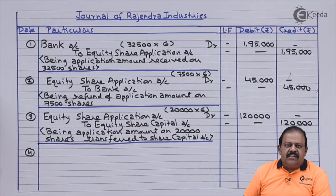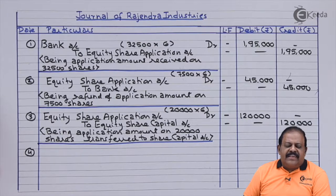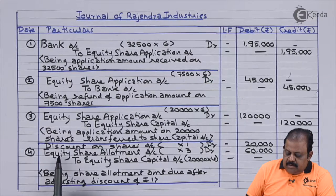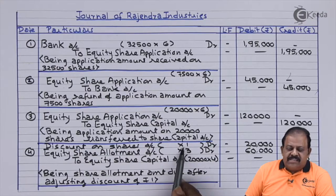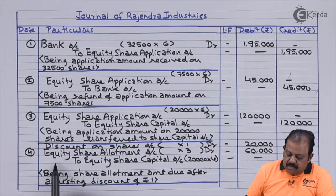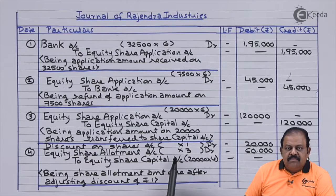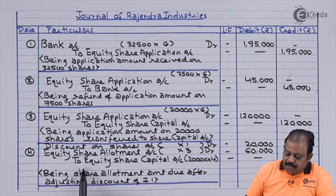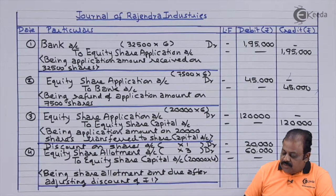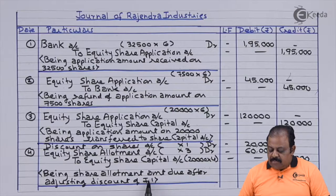Moving to the allotment stage: Entry 4 — for allotment amount due and discount. Discount on Shares Account Dr ₹20,000 (20,000 shares × ₹1). Equity Share Allotment Account Dr ₹60,000 (20,000 shares × ₹3) to Equity Share Capital Account ₹80,000, being share allotment amount due after adjusting discount of ₹1.